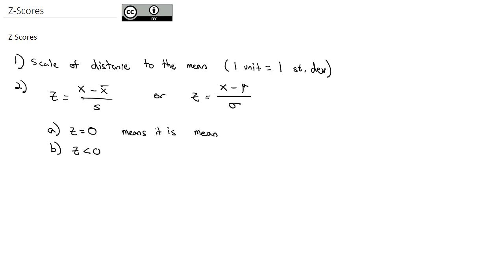If z is negative, less than 0, it means that the value is smaller than the mean. The implication is if z is positive or bigger than 0, it means the value is bigger than the mean.